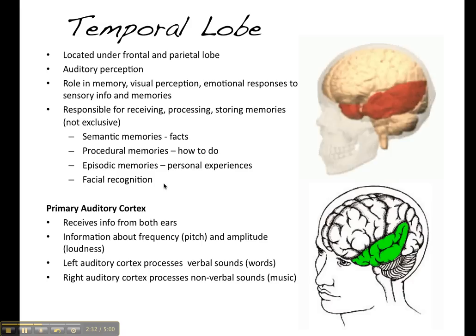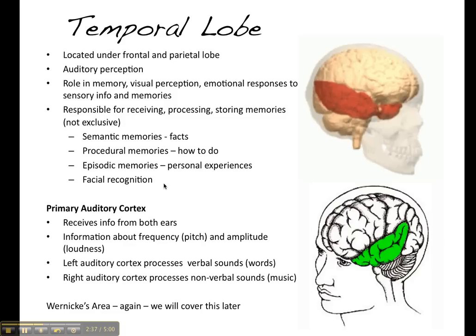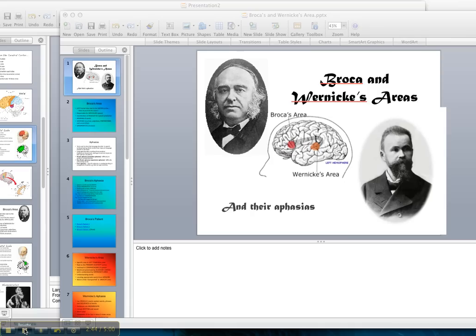Located within the temporal lobe is Wernicke's area. This is Wernicke — he's the person who identified this region, and you can see it located right where the orange dot is on the diagram.